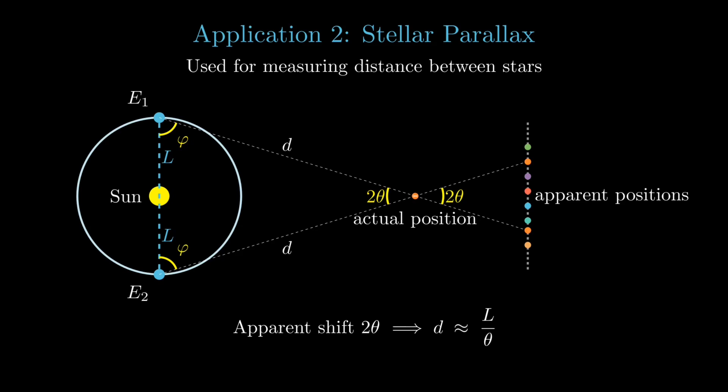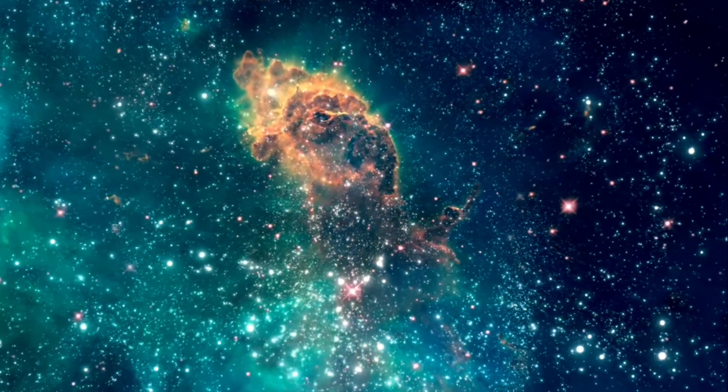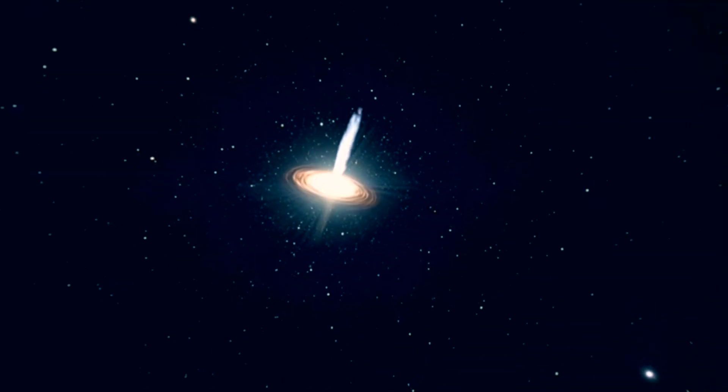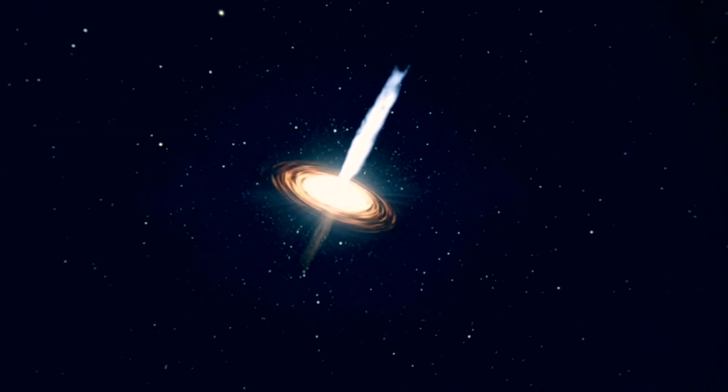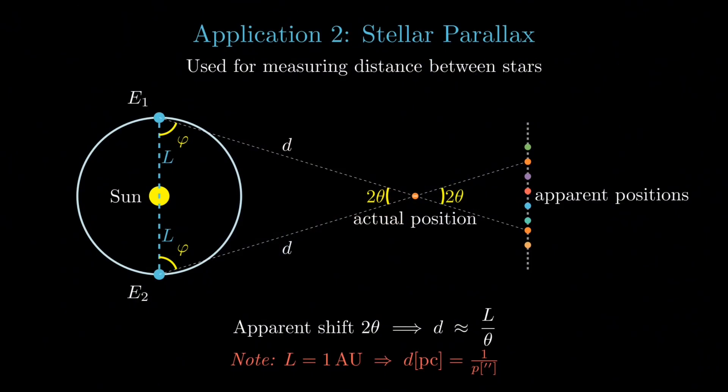And astronomers usually set the baseline L equal to one astronomical unit, which, if you recall, is the average distance between the Earth and the Sun. With this standard baseline, we define the distance unit known as parsec, where a star exactly one parsec away has a parallax angle of exactly one arc second. Thus, stellar parallax forms the foundational method that astronomers rely on to map the vast distances of our universe.